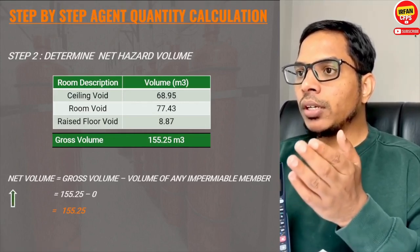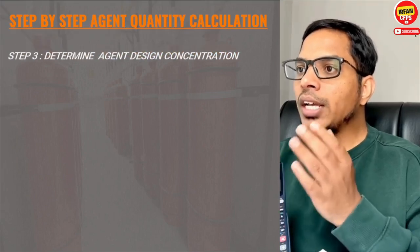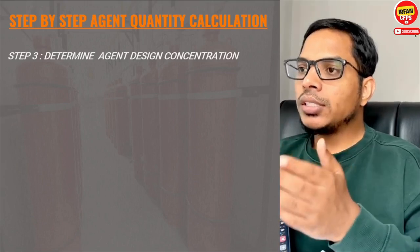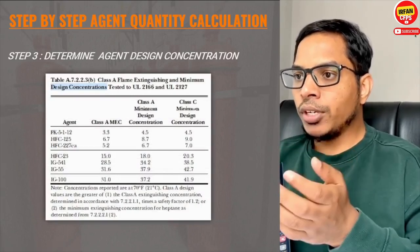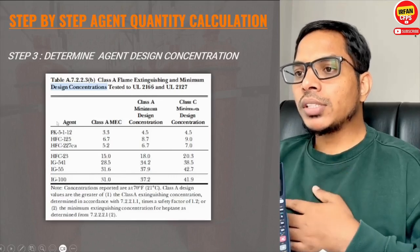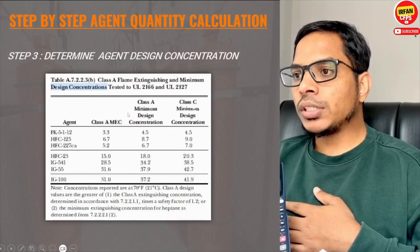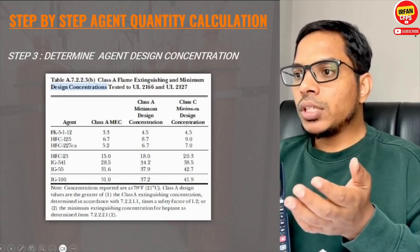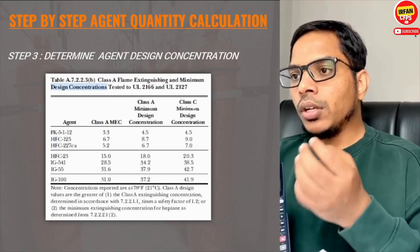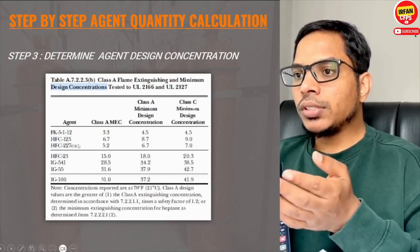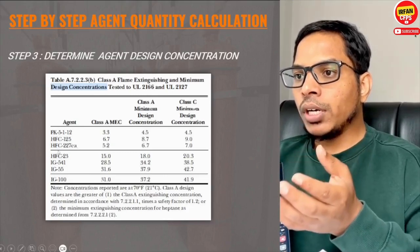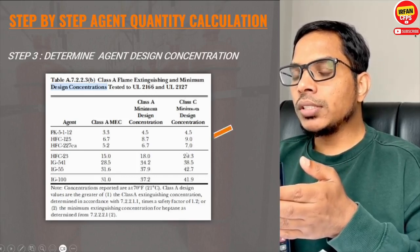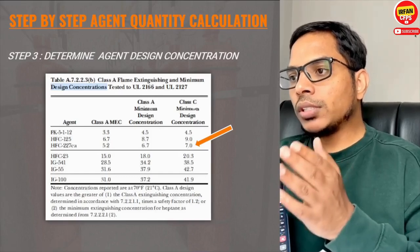Now that we have the net hazard volume, the next step is to determine the agent design concentration. As per NFPA 2001, there are two terminologies: extinguishing concentration and design concentration. The table in NFPA 2001 provides minimum extinguishing concentration and minimum design concentration based on UL testing. Since the chemical name of FM 200 is HFC-227ea and our server room is class C, the design concentration is 7%.